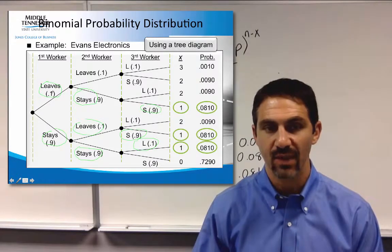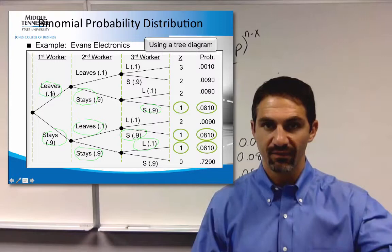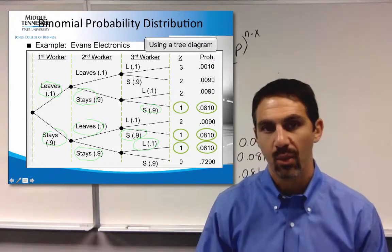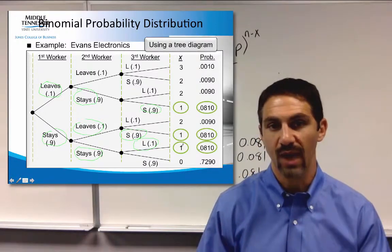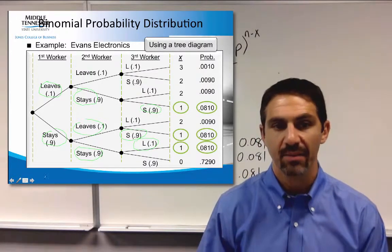Again, you only have one of these, that's why it's 0.1 to the first power, 0.9 to the second power, because there's two of these, and there are three different combinations, which is why we multiplied by three.